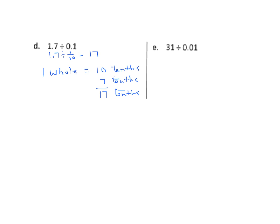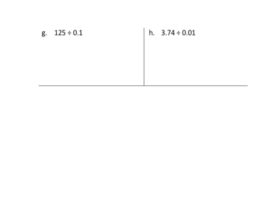Next, we have thirty-one divided by one-hundredth. We know that one whole equals one hundred hundredths. Therefore, thirty-one wholes equals thirty-one times one hundred, giving us three thousand one hundred. Then we have one hundred twenty-five divided by one-tenth. We know that one whole equals ten tenths, so one hundred twenty-five times ten tenths gives us one thousand two hundred fifty.